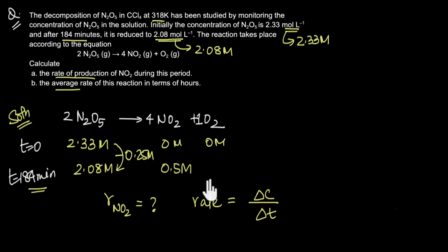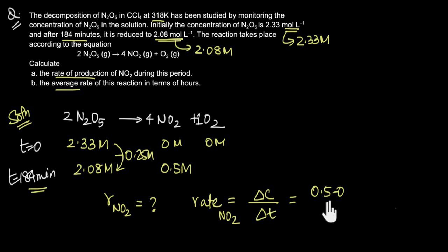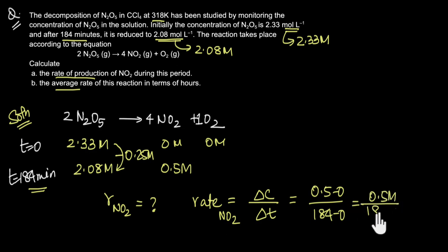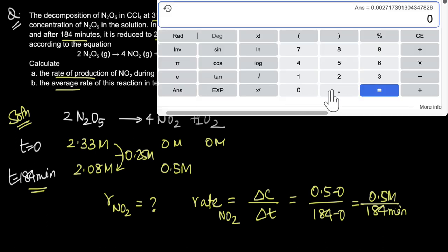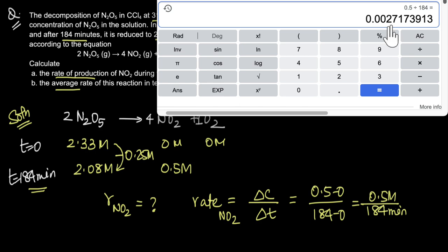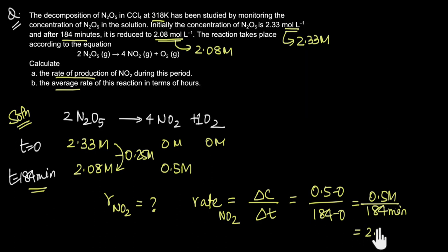The rate of formation of NO2 is the change in concentration of NO2 divided by the change in time — that is, (0.5 − 0) divided by (184 − 0). So this is 0.5 molar in 184 minutes. Doing the math, 0.5 divided by 184 comes out to be 2.7 × 10⁻³ molar per minute. So the rate of production of NO2 is 2.7 × 10⁻³ molar per minute.